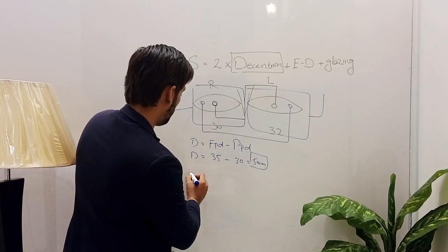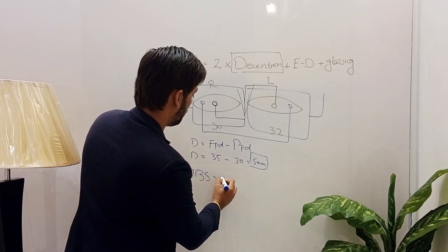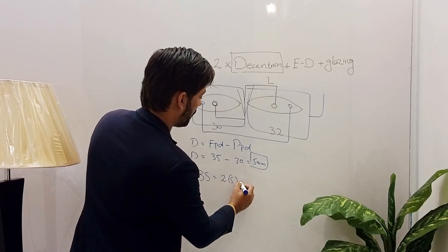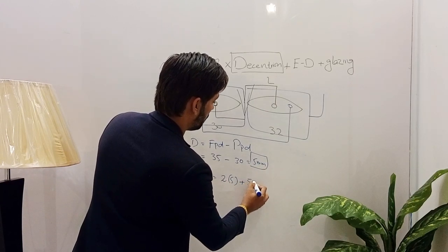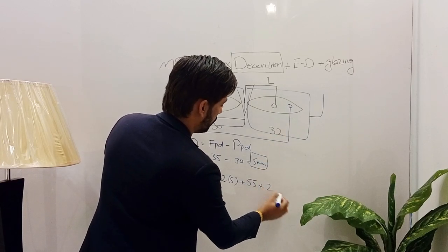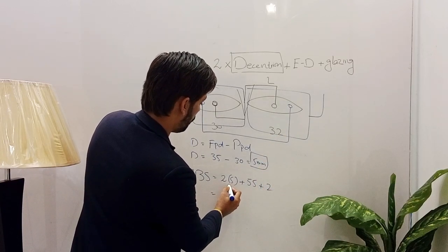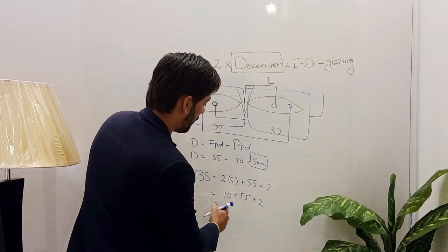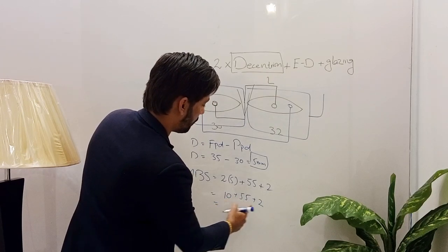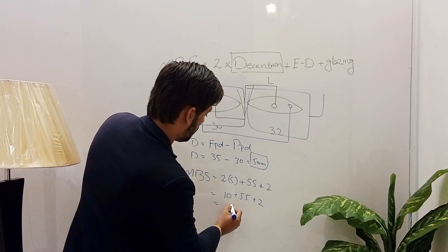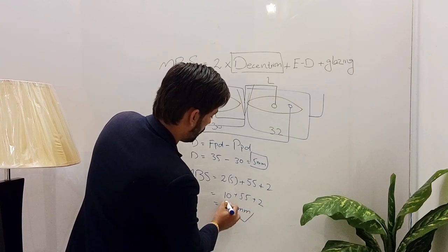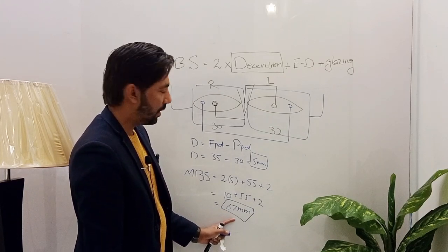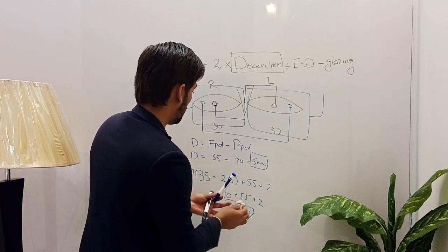Applying the minimum blank size formula for the right eye: 2 × decentration + effective diameter + glazing = 2 × 5 + 55 + 2 = 10 + 55 + 2 = 67 mm. So the minimum blank size for the right eye is 67 mm.